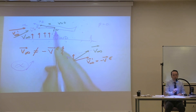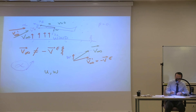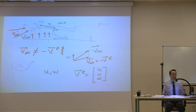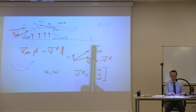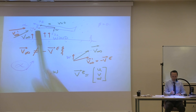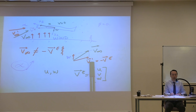What happened to U and W? Did they change? U, V, and W are the components of the velocity vector of the airplane with respect to the Earth or inertial frame. So they really didn't change. What has changed is V_infinity. Because of the upwind, the direction of V_infinity has changed, and therefore alpha has changed.